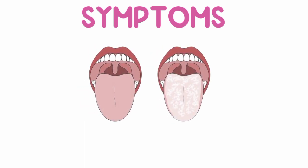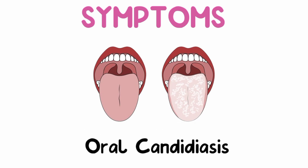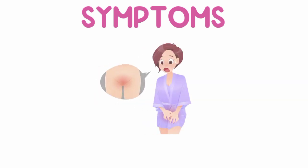Symptoms of Candidiasis. The symptoms of Candidiasis vary depending on the affected area. A. Oral Candidiasis (thrush): white or creamy patches on the tongue, inner cheeks, roof of the mouth, or back of the throat. These patches may be painful and can bleed if scraped.